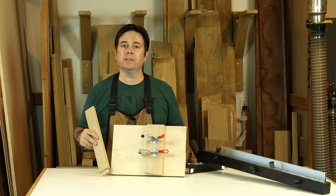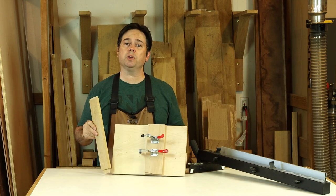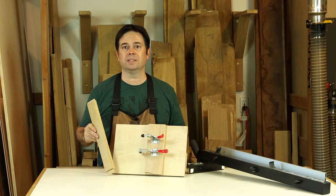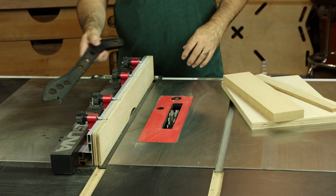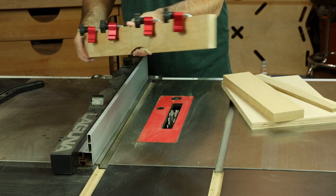There's a couple of toggle clamps on the front that'll hold the workpiece securely in a vertical position and we'll show you two ways to use this jig. We'll pull off some of the accessories we normally have on the saw like the push stick and this custom sacrificial fence.